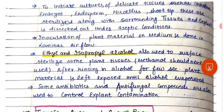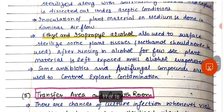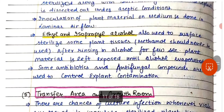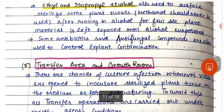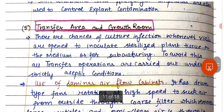Inoculation of plant material on the medium is done in the laminar airflow. Ethyl and isopropyl alcohol are also used to surface sterilize some plant tissues. Methanol should never be used. After rinsing in alcohol for a few seconds, plant material is left exposed until the alcohol is evaporated. Some antibiotics and antifungal compounds are also used to control explant contamination.